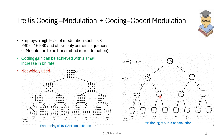The third type is trellis coding or coded modulation, where we combine coding with modulation. We have two examples: 8-PSK on the right and 16-QAM on the left. In trellis coded modulation, we have a constellation diagram and go through a trellis — a certain sequence — not all sequences are possible. We employ a high level of modulation such as 8-PSK, 16-PSK, or 16-QAM and allow only certain sequences of modulation to be transmitted. Any sequence that's not possible is considered an error, so we combine modulation with coding. Coding gain can be achieved with a small increase in bit rate while maintaining excellent spectral efficiency.